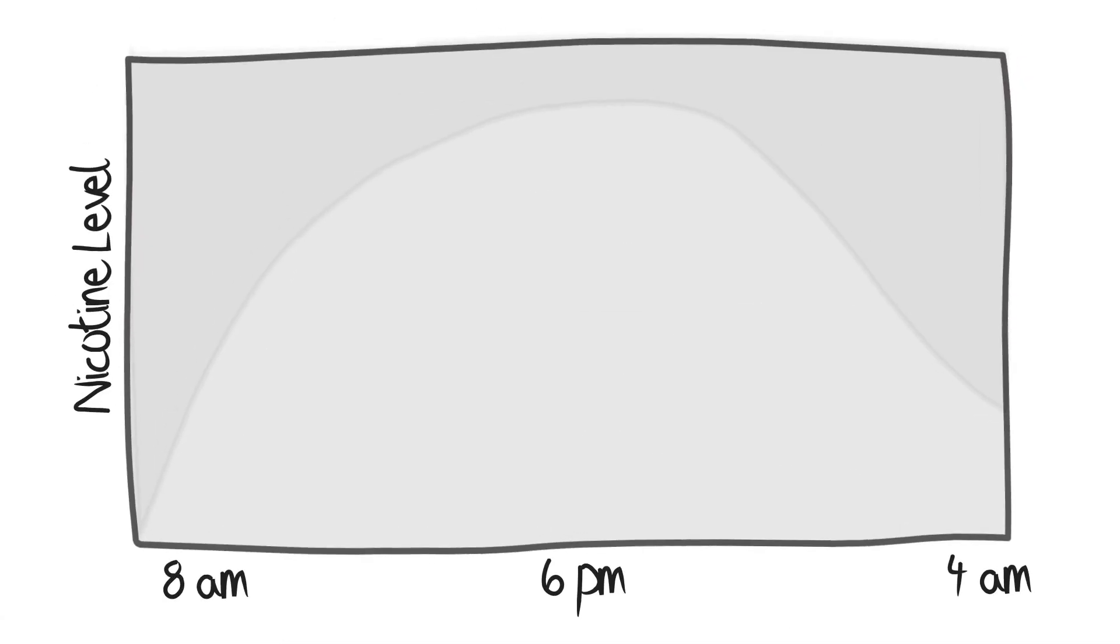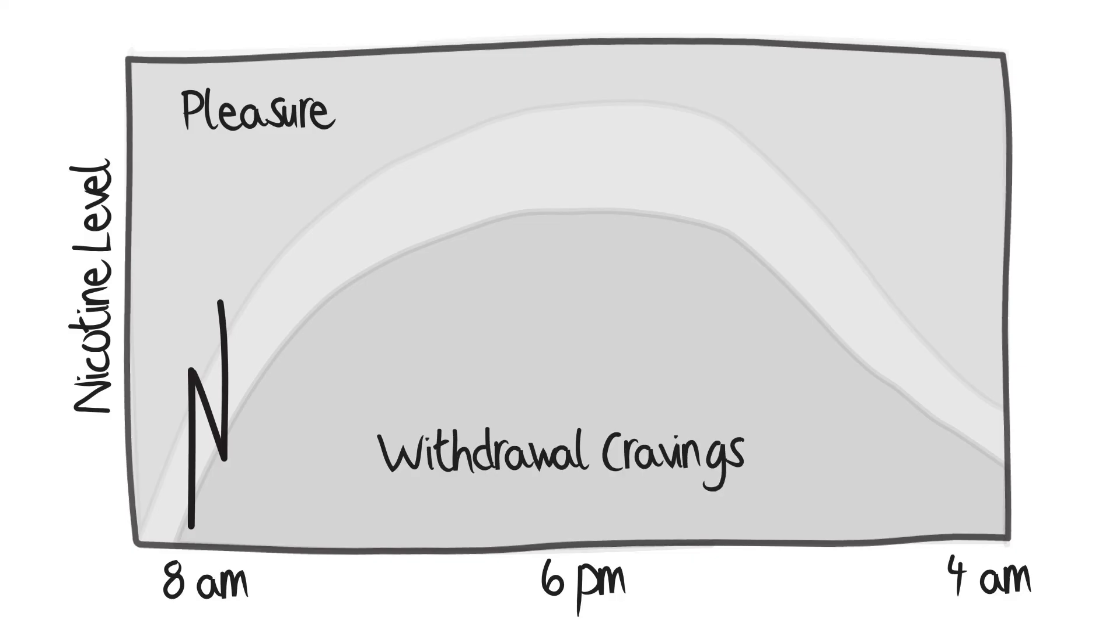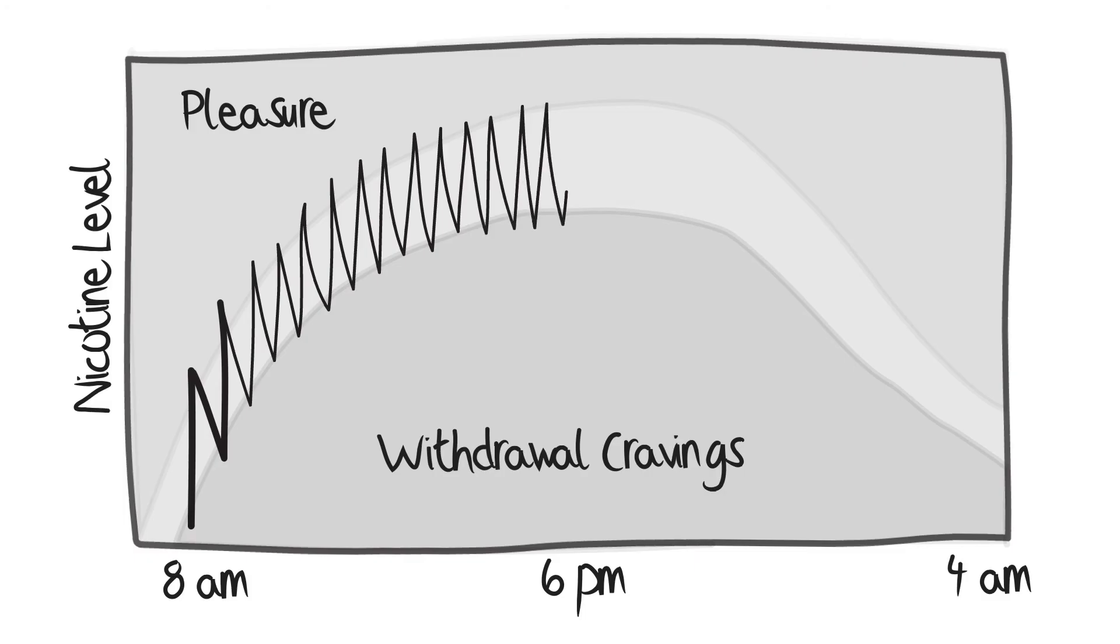For a daily tobacco smoker, their first cigarette of the day causes the concentration of nicotine in their blood to spike to a level that signals pleasure in the brain. After a smoker is finished with their cigarette, the level of nicotine in their blood begins to decline until the next cigarette is smoked. Often, that next cigarette is smoked when the level of nicotine in their blood falls below a certain threshold, causing the smoker to feel symptoms of nicotine withdrawal, which include cravings. As a daily smoker smokes throughout the day, the level of nicotine required to maintain their usual level of pleasure increases, meaning that it takes more nicotine to get the same effects. This phenomenon is called tolerance.